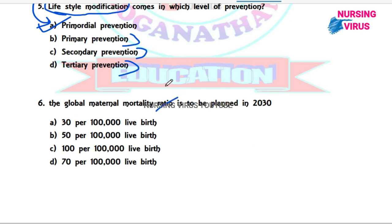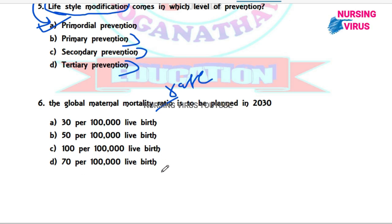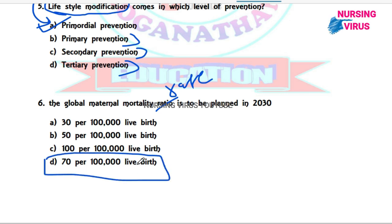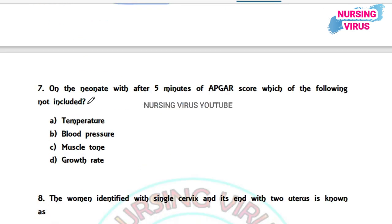Question 6: The global maternal mortality rate target planned for 2030. The options are 30 per 1 lakh live births, 50 per 1 lakh live births, and 100 per 1 lakh live births. The correct answer is 70 per 1 lakh live births. This question has been asked in previous examinations as well.